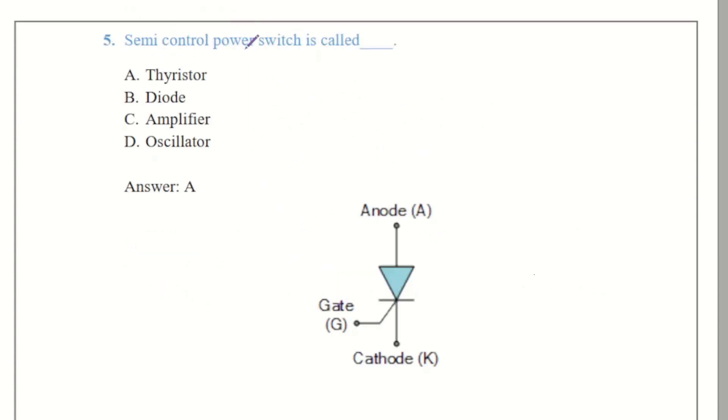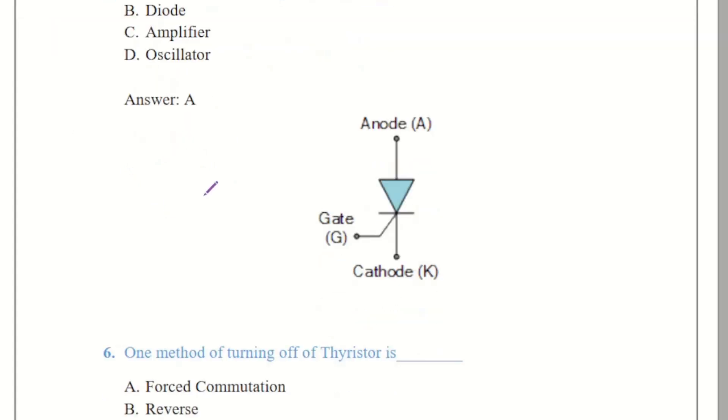The semi controlled power switch is called. So obvious there will be the thyristor because in thyristor there is a third terminal known as a gate and it is used for to control on and off the device. In diode we are using the two terminals anode and cathode. And amplifier is for the amplification process. So obviously there will be the answer A that is a thyristor.